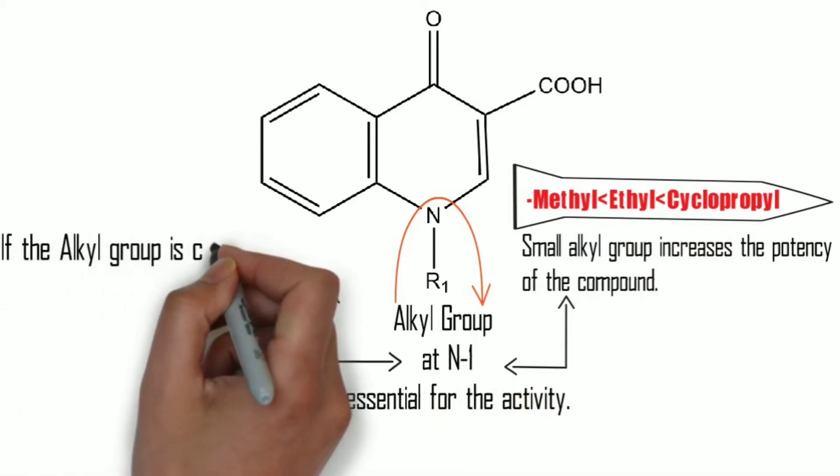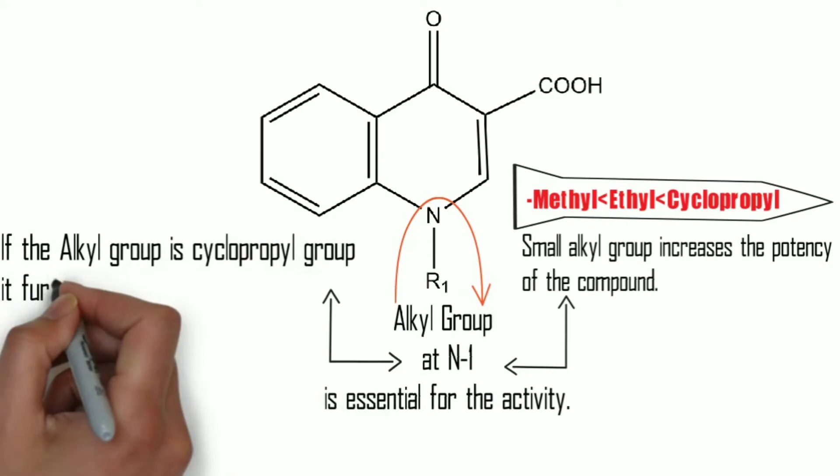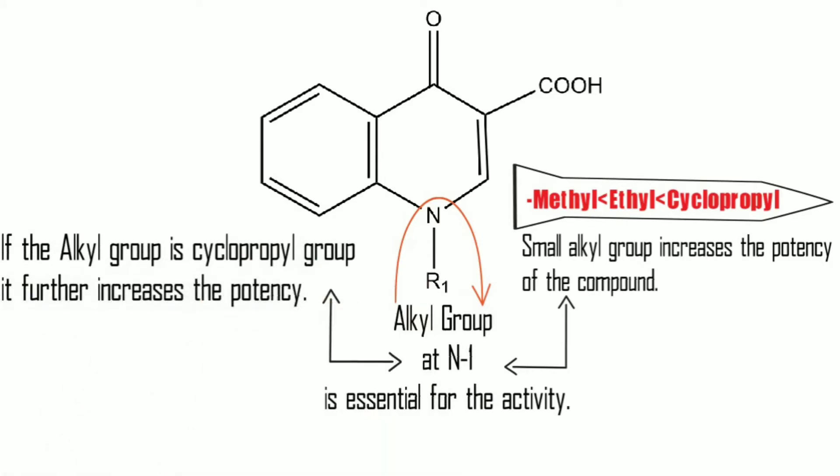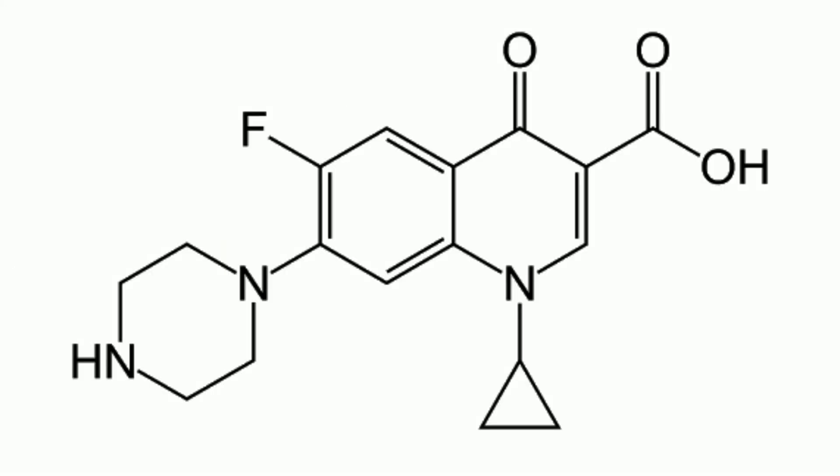Similarly, it is written in the third point: if the alkyl group is cyclopropyl group, it will further increase the potency. For example, in case of ciprofloxacin, ciprofloxacin is more potent than norfloxacin because ciprofloxacin is having cyclopropyl moiety. That's why ciprofloxacin is more potent than norfloxacin.